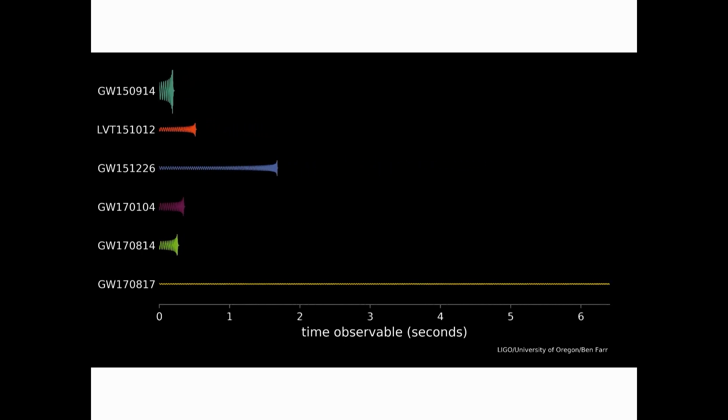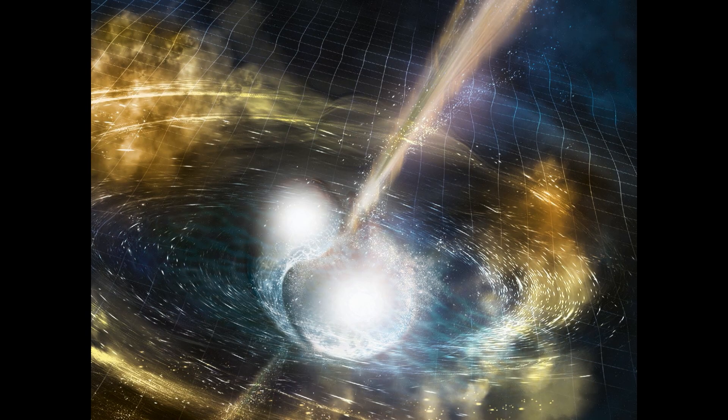And then last August, something happened. So this is showing all of the signals. And a final signal that came in August 17th. And of course, the first thing you notice is that one is much longer. The other signals are a few seconds. This one is 50 seconds, 60 seconds, 100 seconds. That signal is the signal you would expect not from merging black holes but from merging neutron stars.